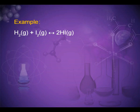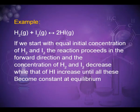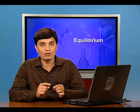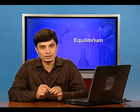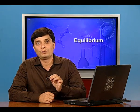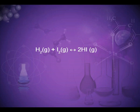Consider the reaction H₂ + I₂ ⇌ 2HI. If we start with equal initial concentrations of H₂ and I₂, the reaction proceeds in the forward direction, concentrations of H₂ and I₂ decrease, and concentration of HI increases until all become constant at equilibrium. We can also start with HI alone and let the reaction proceed in reverse — concentration of HI decreases and concentrations of H₂ and I₂ increase until constant. When equilibrium is reached, the same equilibrium mixture is obtained whether we start from pure reactants or pure products: H₂(g) + I₂(g) ⇌ 2HI(g).